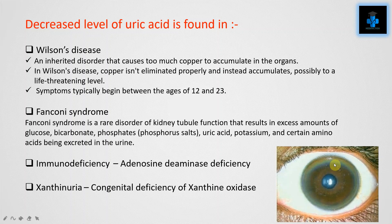Fanconi syndrome is a rare disorder of kidney tubule function that results in excess amounts of glucose, bicarbonate, phosphates, uric acid, potassium, and certain amino acids being excreted in the urine. Other reasons for decreased uric acid include immunodeficiency such as adenosine deaminase deficiency, and xanthinuria, which is a congenital deficiency of the enzyme xanthine oxidase.